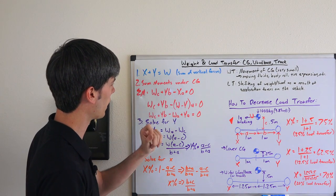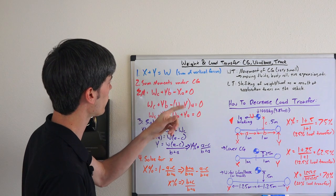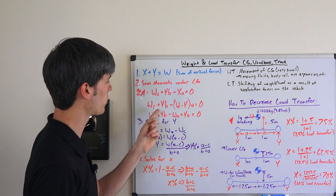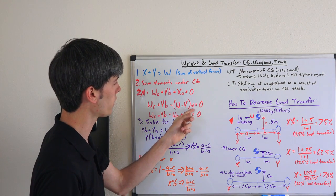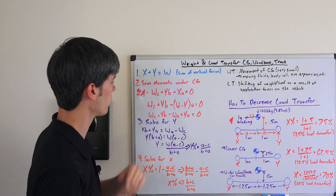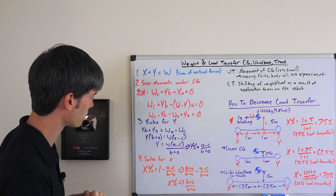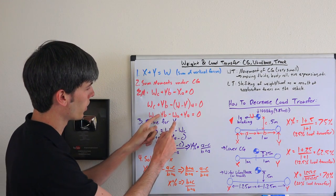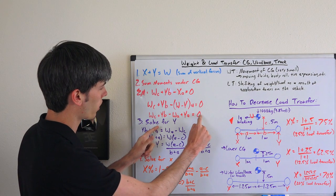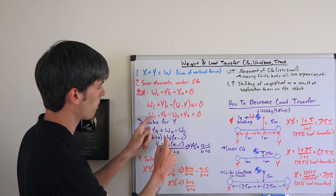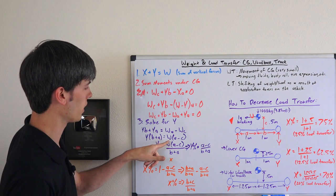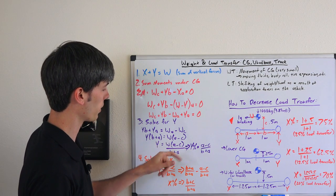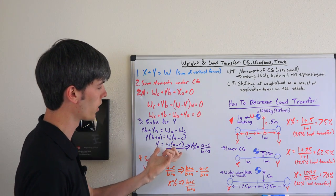Now we can substitute in for X here because X is equal to w minus y from our first equation. So wc plus yb minus w minus y times a equals 0. Solve that out and you've got wa plus ya. So now let's solve this equation for y. So we've got yb plus ya equals, move that over to the other side, wa minus wc. So yb plus a equals wa minus c. So y equals w times a minus c over b plus a, and this is the load on y.